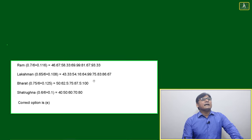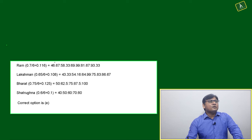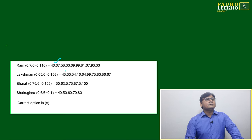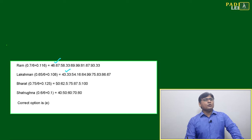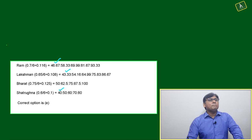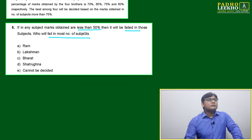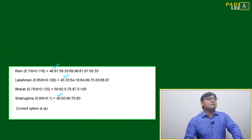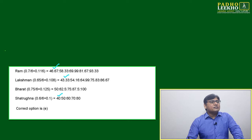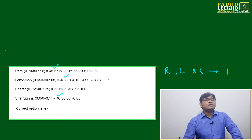Based on the same data, how many subjects are they getting less than 50%? Ram: 46.67% - one subject. Lachman: one subject. Bharat: all are minimum 50% or more, so Bharat is not failed in any subject. Satrughna: 40% - note that less than 50% means 50 itself will not be counted as failed.